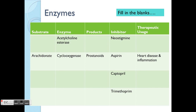Aspirin is interesting because it can be used at two different doses. Baby aspirin — about 50 to 250 mg per day — can be used daily for prevention of heart diseases in at-risk people. At a much higher dose, like 300 mg, it can be used to reduce inflammation.